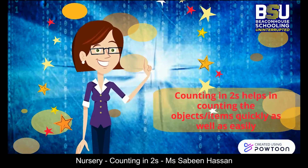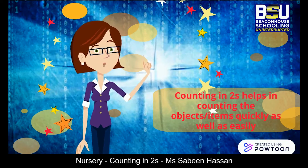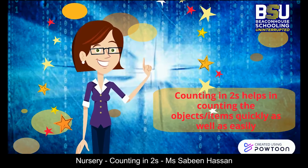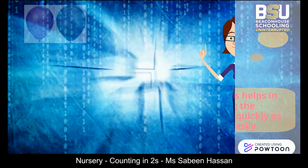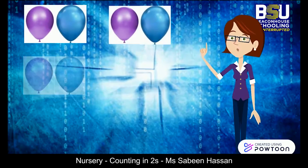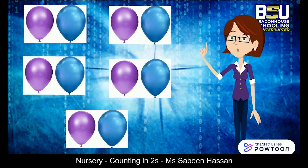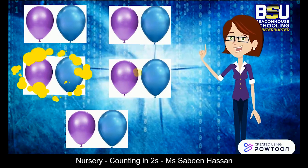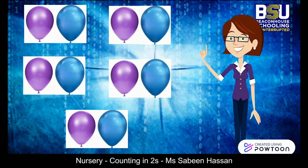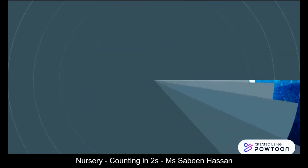Do you know why we need to count in twos? Because it helps us count items very easily and quickly. For example, if we count balloons one by one it takes more time, but counting them in pairs is easier: two, four, six, eight, ten — all together ten balloons!